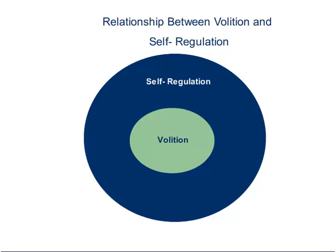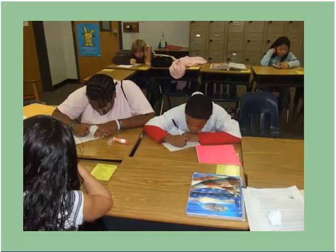Here we're looking at a Venn diagram. In the diagram, we see that volition is a component within self-regulation. As the diagram shows, you can be self-regulated but not encompass aspects of volition. Self-regulated students are active in their own learning. Their behavior, motivation, and thought processes determine their skill, performance, and academic goals.